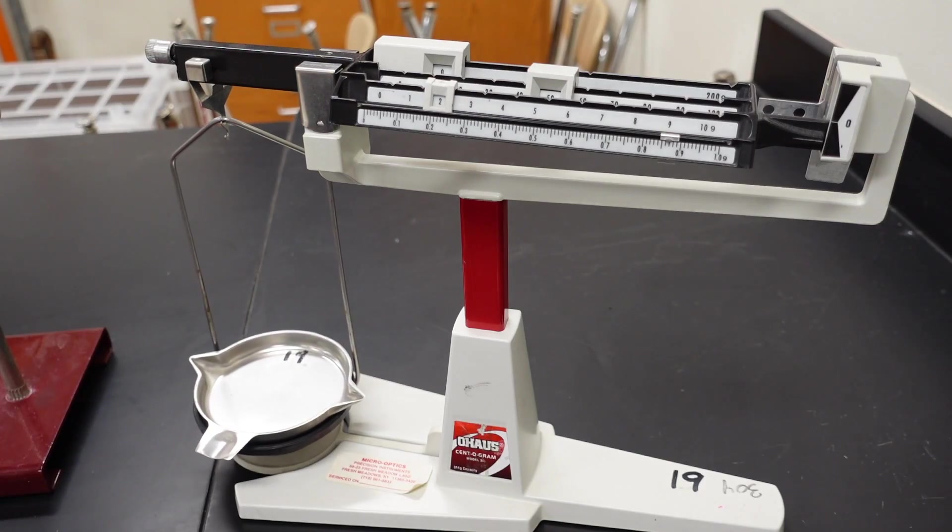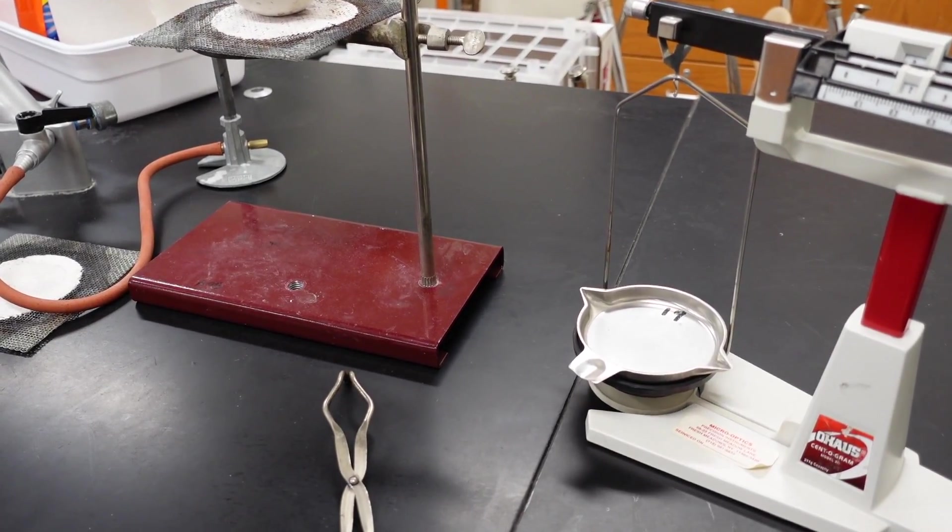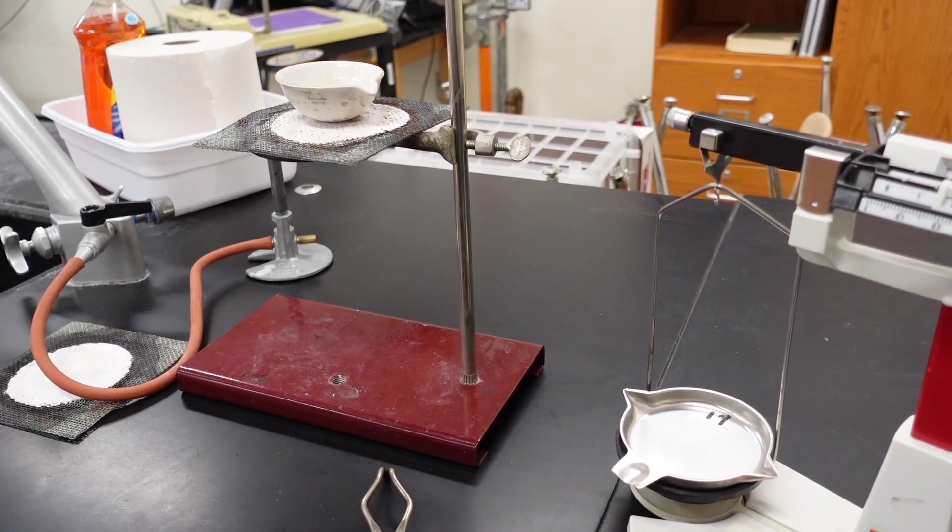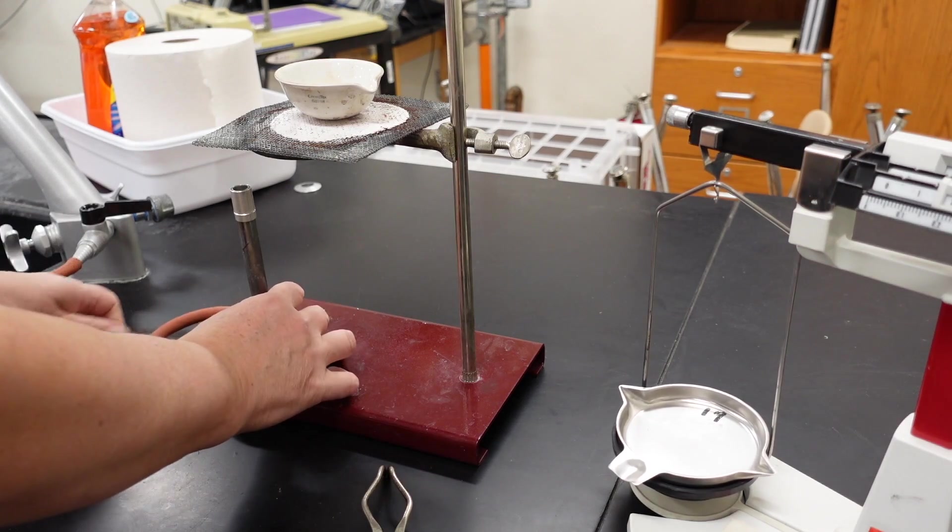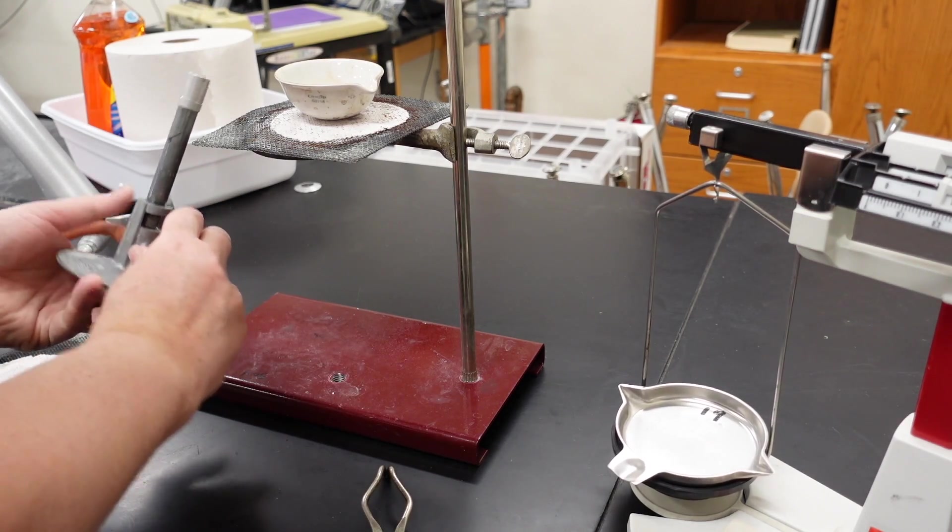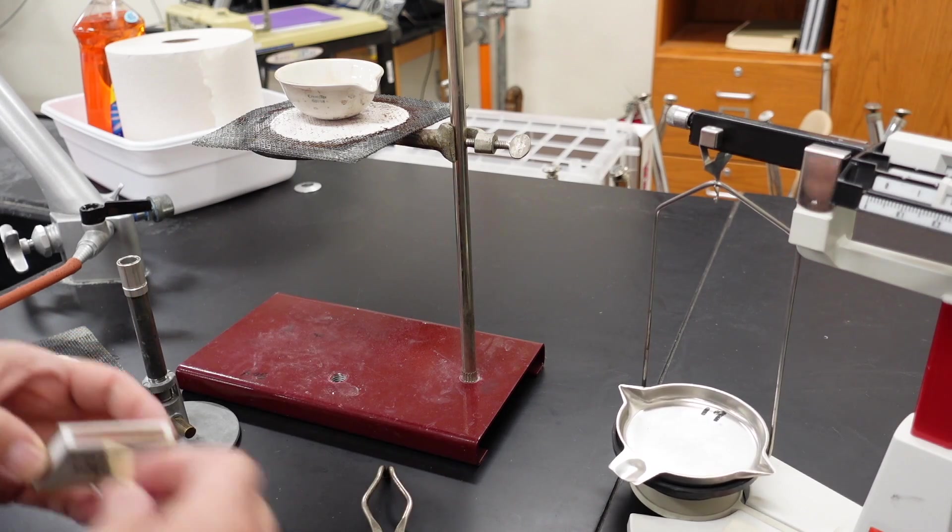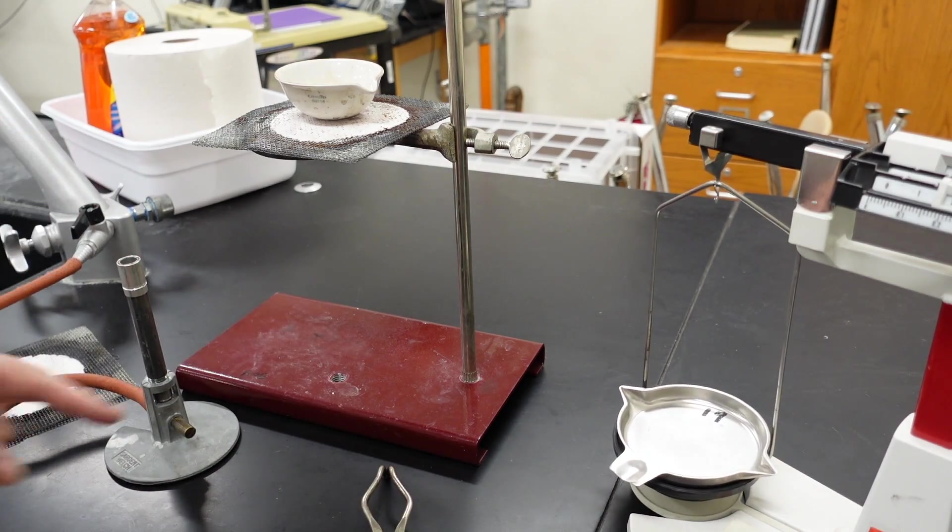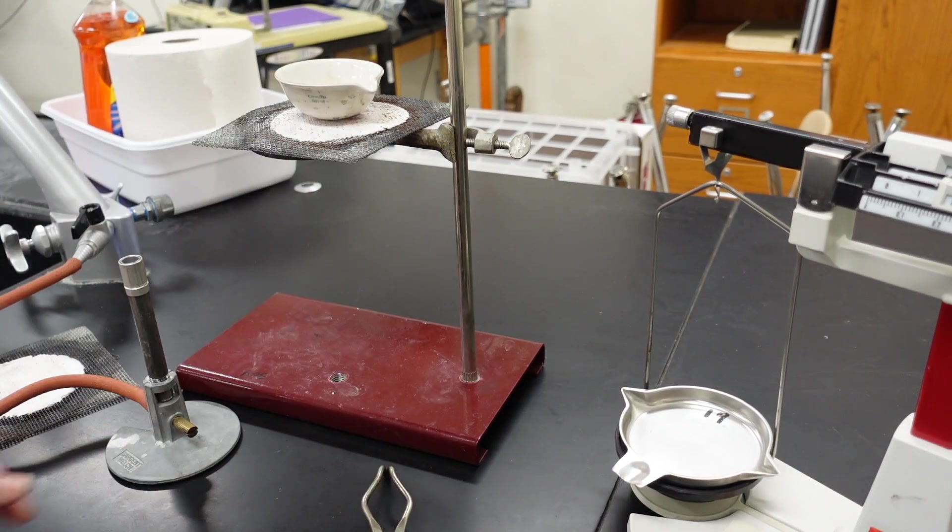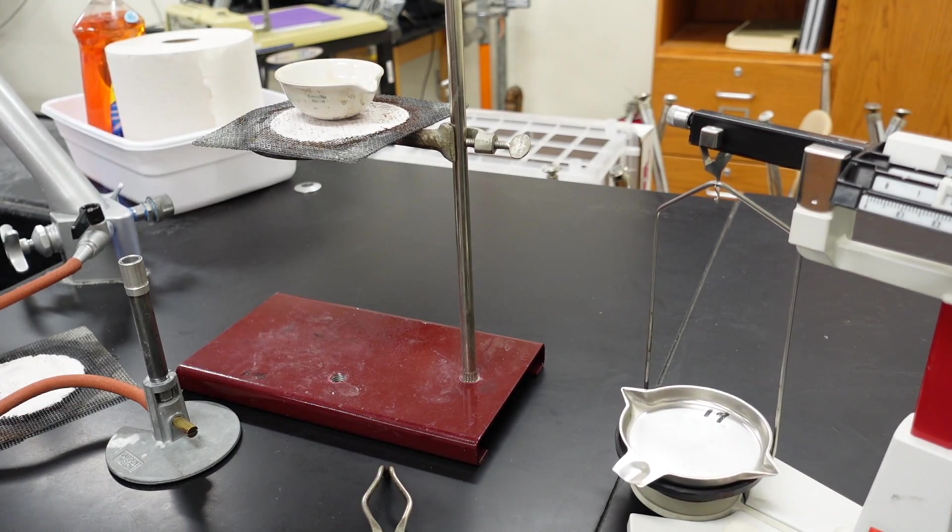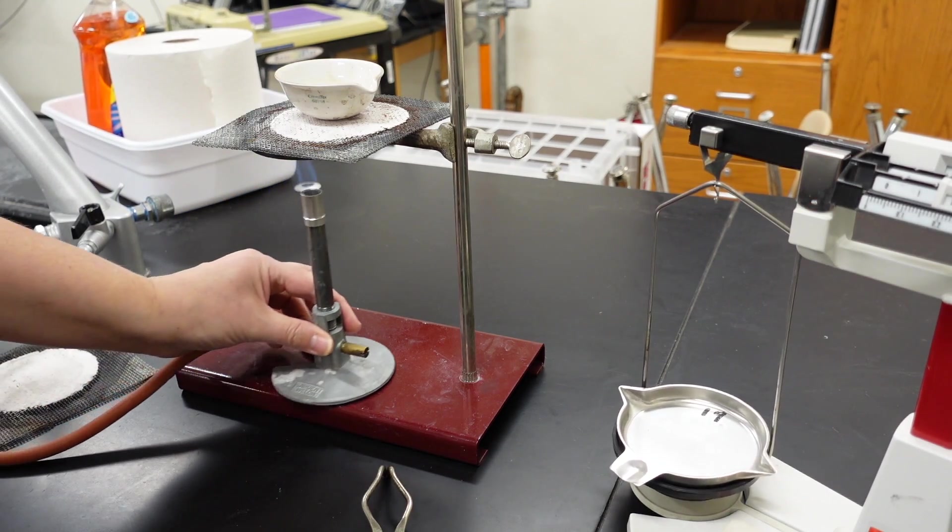Next up, we need to heat it up on a ring stand over a Bunsen burner. So let's do that. Safety checks for the Bunsen burner. Tug, tug, righty tighty, and make sure there's an air hole. Okay, turn on the gas, make sure the needle valve is closed, strike the match, turn half a turn to the left. Beautiful. Okay, let's start heating.